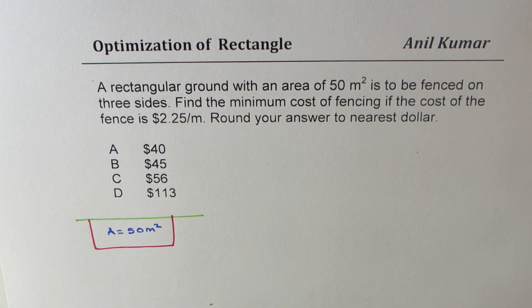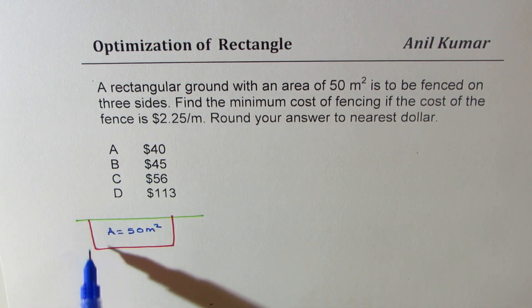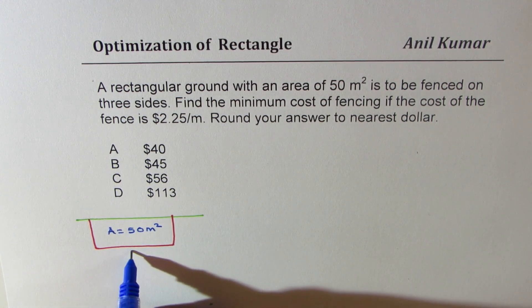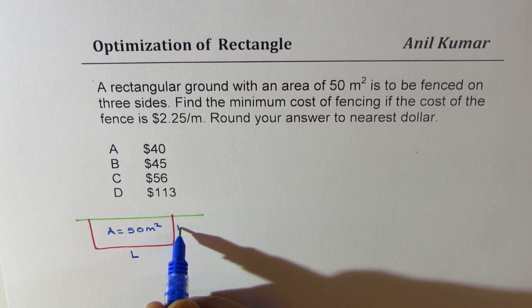From what we have learned about optimization of rectangles, we know that if we are using only three sides, in that case, length is equal to twice width.